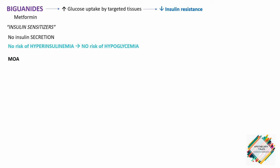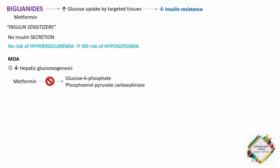Talking about the mechanism of action of metformin: first, it basically reduces hepatic gluconeogenesis — that is the hepatic production of glucose. Metformin blocks two enzymes involved in hepatic gluconeogenesis: glucose-6-phosphatase and phosphoenolpyruvate carboxykinase. As a result, hepatic synthesis of glucose is reduced. The excess glucose produced by the liver is a major source of high blood glucose in type 2 diabetes, accounting for the high fasting blood glucose.